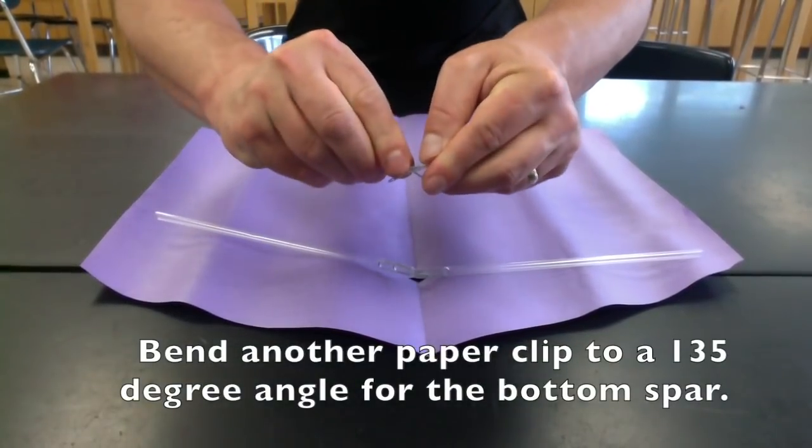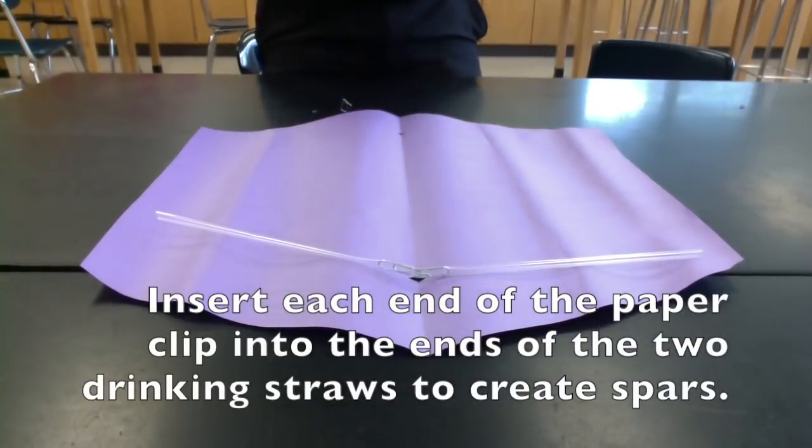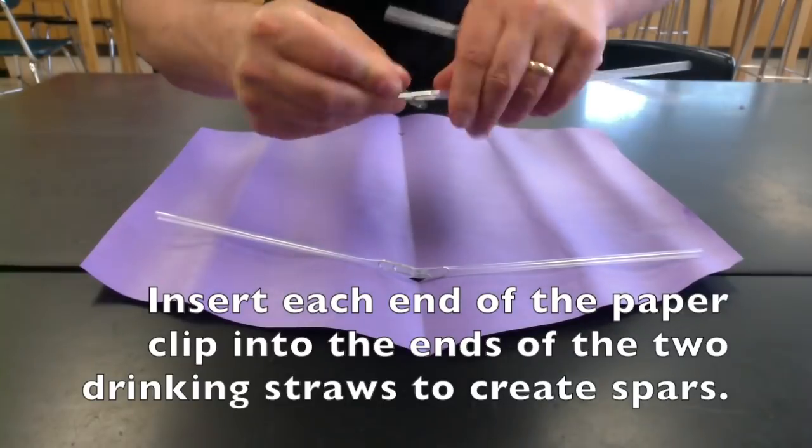Bend another paper clip to a 135 degree angle for the bottom spar. You will insert each end of the paper clip into two drinking straws.